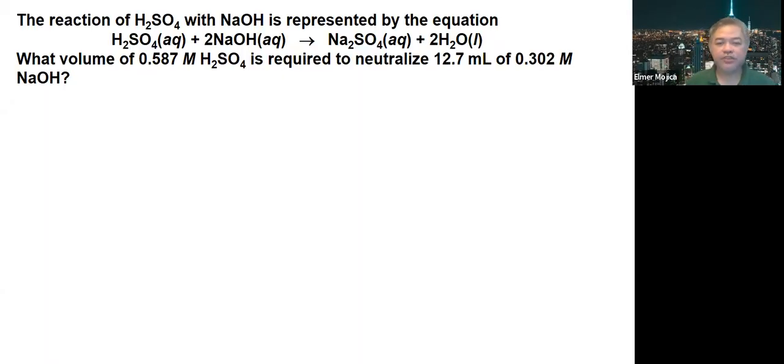In this problem involving acid-base reaction, the reaction of sulfuric acid with NaOH is represented by the equation: 1 mole of sulfuric acid reacting with 2 moles of NaOH to produce sodium sulfate and water.